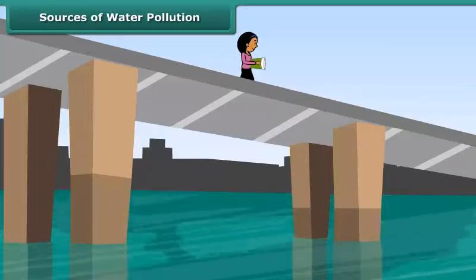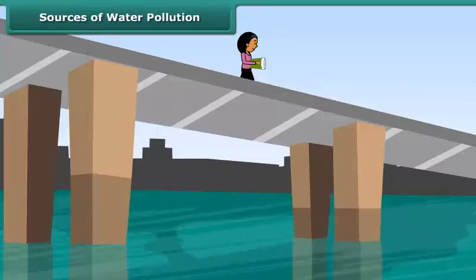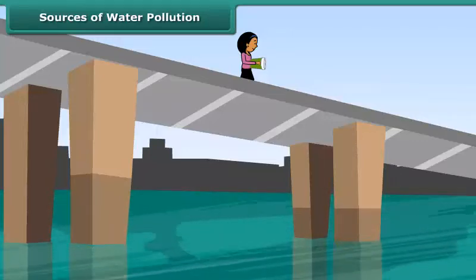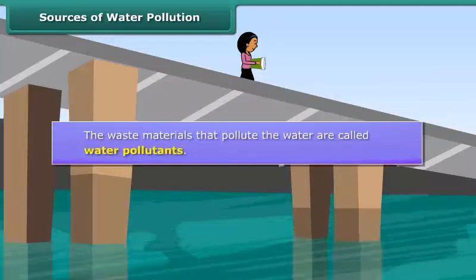Many rivers have become dead due to high levels of pollution, and aquatic life cannot survive in them. The waste materials that pollute the water are called water pollutants.